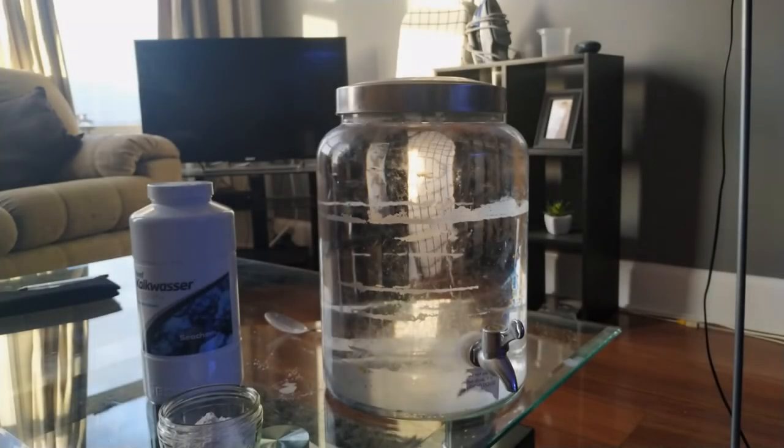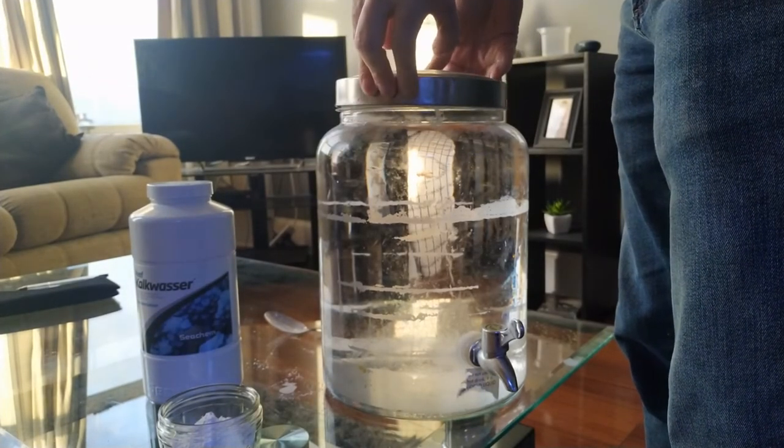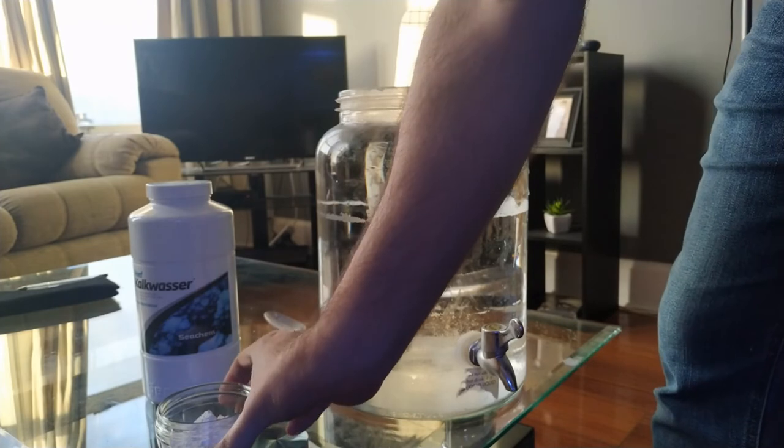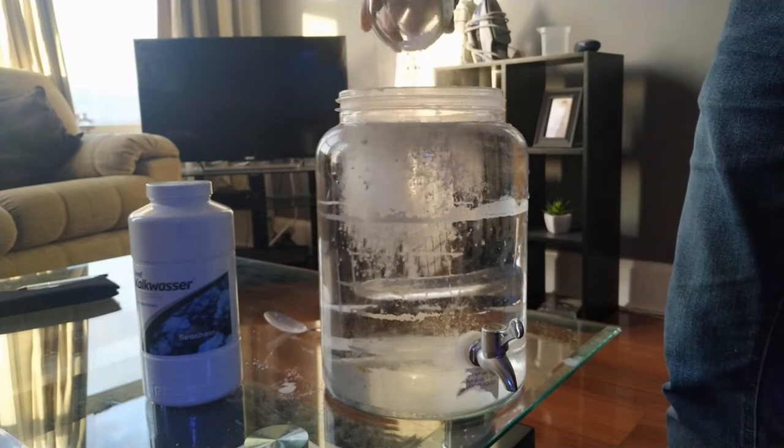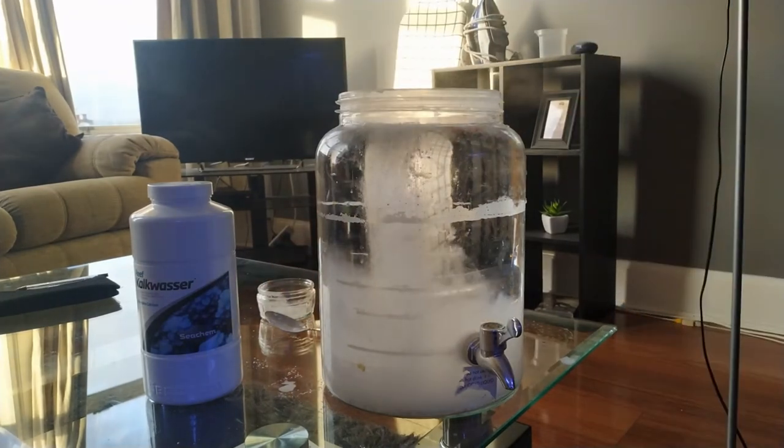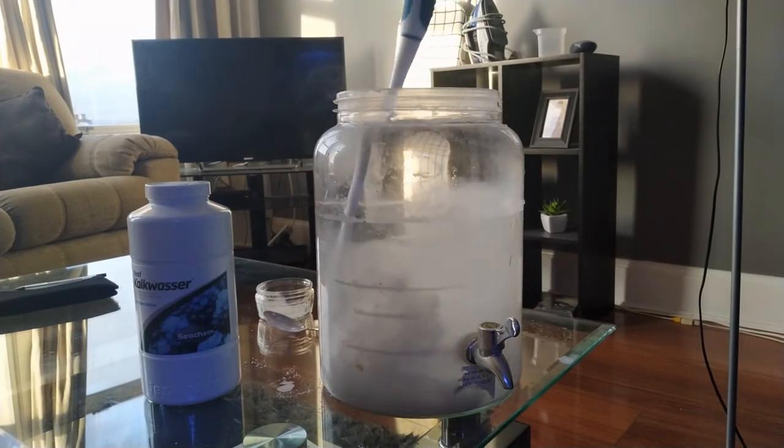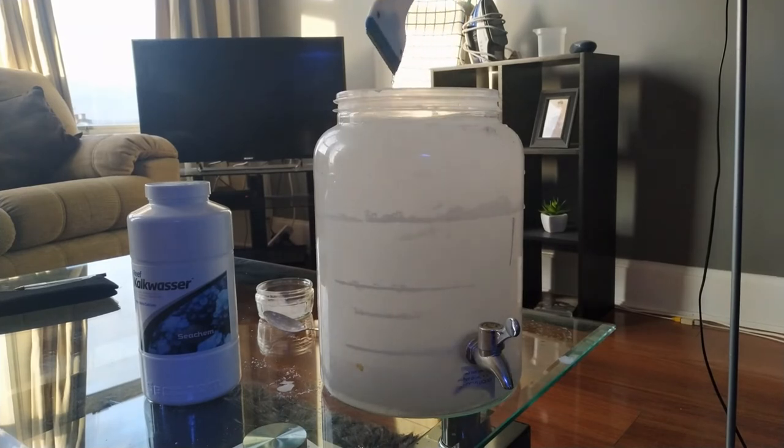Before we get into the stirrer setup, I'll just quickly show you a way of how to dose Kalkwasser without a stirrer. What you want is some kind of sealed container like this old drinks decanter I've got here. I've predetermined that I need 12 grams of Kalkwasser to make a fully saturated solution without any waste. The container holds 7 liters. What you do is add the Kalkwasser, then give it a good stir, seal it back up and leave it for a few hours.